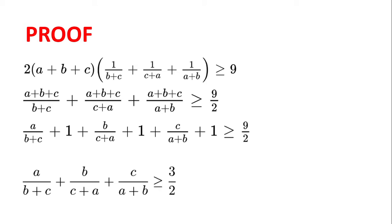We take 3 away from both sides and we get the desired inequality: a divided by b plus c plus b divided by c plus a plus c divided by a plus b is greater than or equal to three halves. This is known as Nesbitt's inequality.